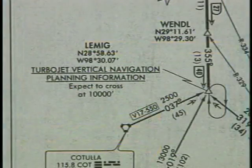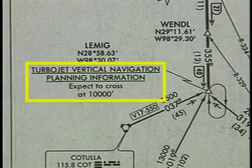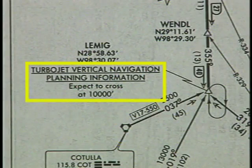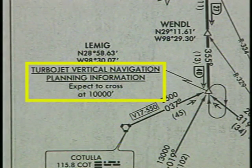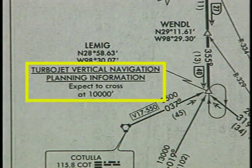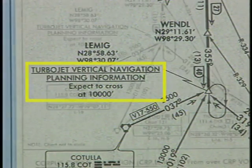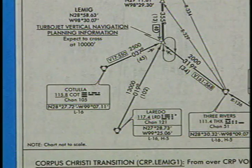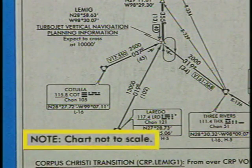The LEMIG-1 arrival also contains information that will help jet pilots plan their descents. The vertical navigation planning section on some STARs may contain several altitude step-down fixes. Because of the large geographic area covered by standard terminal arrival routes, the charts are normally not drawn to scale.